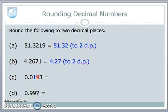My next number is 0.0193. My third place is a nine. That's bigger than five. So therefore, I'm going to again round up. And this number becomes 0.02. And again, I'm showing the level of accuracy by putting after my number to two decimal places.